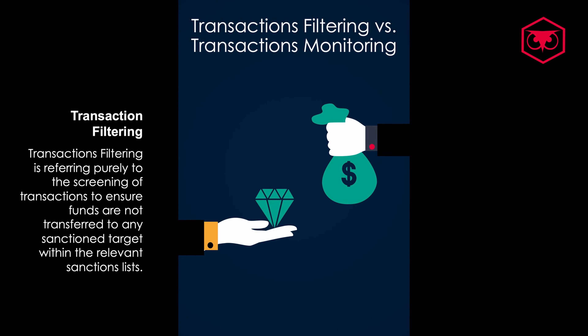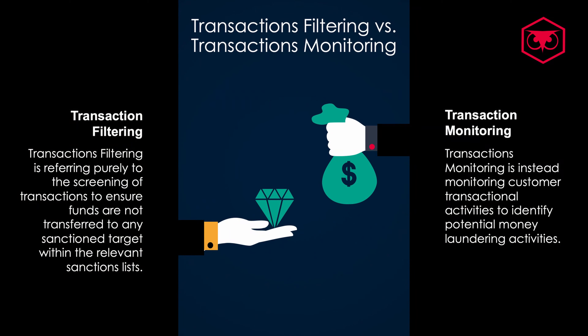Before we move into the details of the role as a compliance officer in transaction filtering, let's make a differentiation here between AML transaction monitoring and sanctions transaction filtering. Transaction filtering is purely referring to the screening of transactions against the sanctions list a financial institution is in scope to screen against. There will be a system in place that will complete the screening of the transactions versus those lists in order to identify potential matches, whereas in anti-money laundering you're not monitoring the specific transaction against a list, but you are monitoring the customer activities in order to identify money laundering activities completed by the customer. So it's a different approach and a different perspective in how you're looking at the activities.